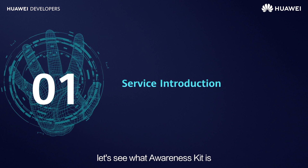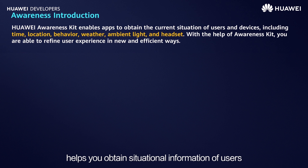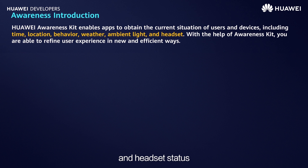First, let's see what Awareness Kit is. Awareness Kit helps you obtain situational information of users, including time, location, user behavior, weather, ambient light, and headset status.